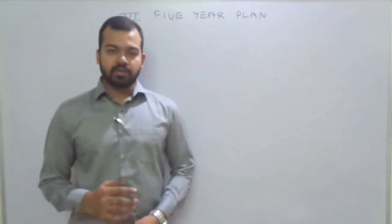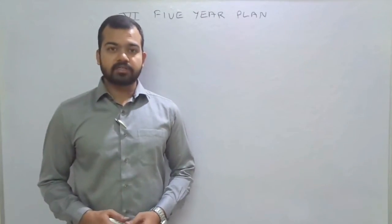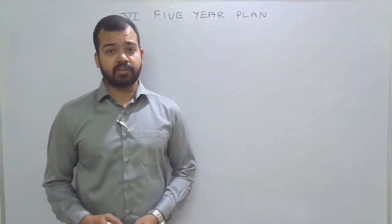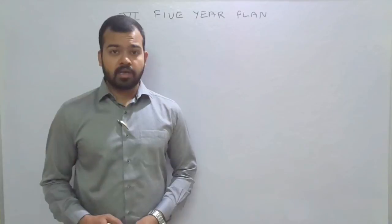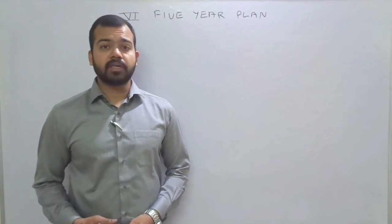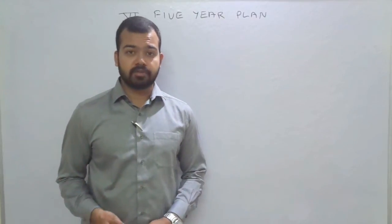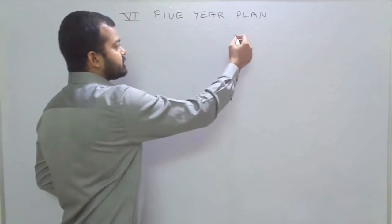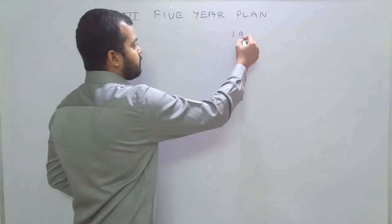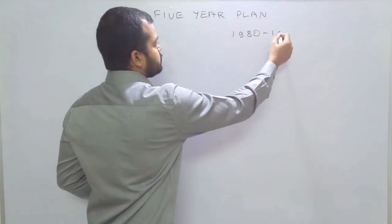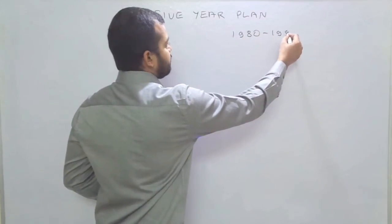Welcome to this video. In this video we will discuss about the process of the 6th Five Year Plan. First of all we will write the period of this Five Year Plan. The period for the 6th Five Year Plan was 1980 to 1985.